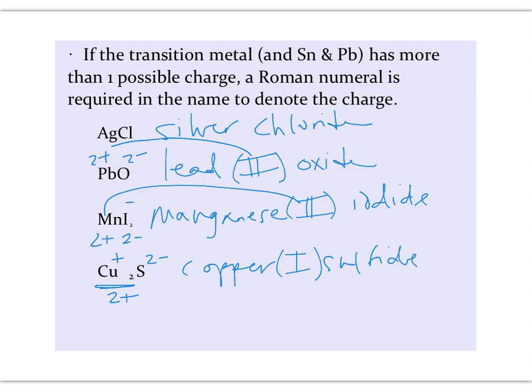So hopefully now you know how to write names and chemical formulas for binary ionic compounds, including those that have transition metals.